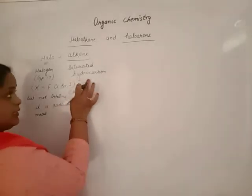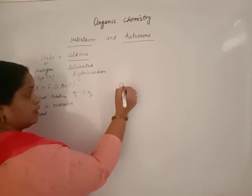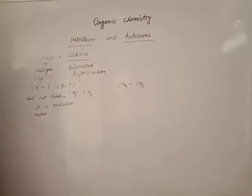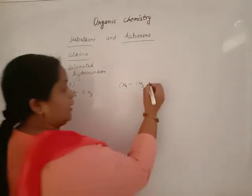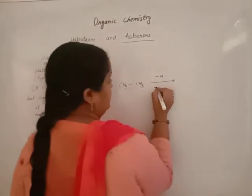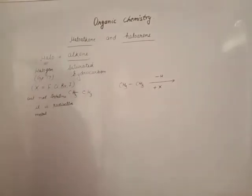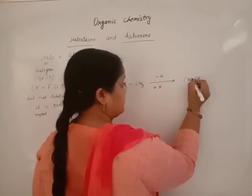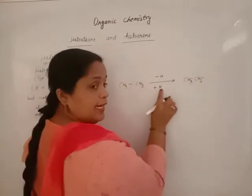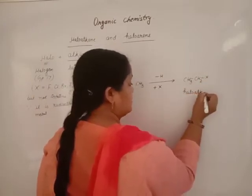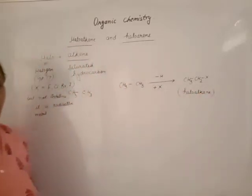How are these compounds formed? A hydrogen atom from the saturated hydrocarbon is replaced by any of the halogens — either fluorine, chlorine, bromine, or iodine. One H is replaced, and in its place we add a halogen. The resulting compound is known as a haloalkane.